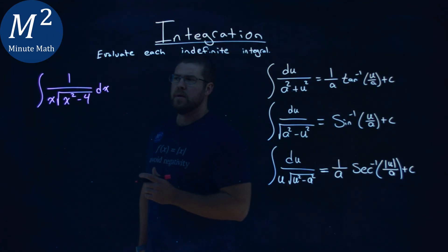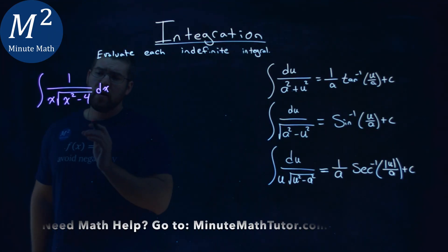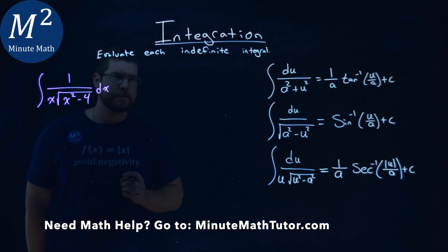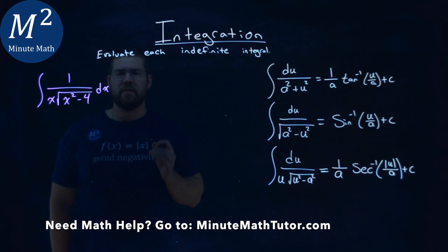We're given this problem right here, the integral of 1 over x times the square root of x squared minus 4 dx, and we have to evaluate this indefinite integral.